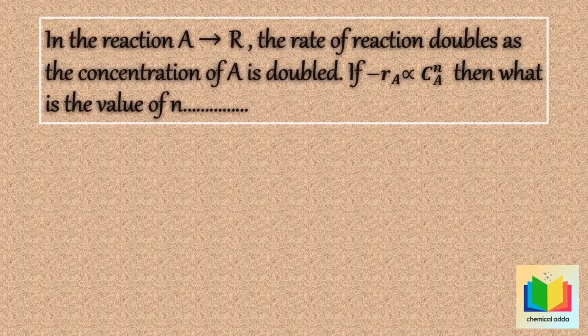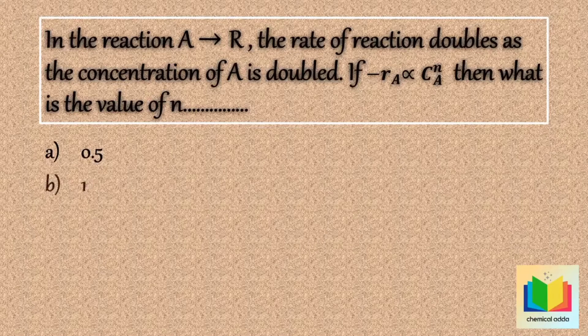In the reaction A gives R, the rate of reaction doubles as the concentration of A is doubled. If minus rA is proportional to cA raised to n, then what is the value of n? Options are: option A: 0.5, option B: 1, option C: 0, option D: 2.